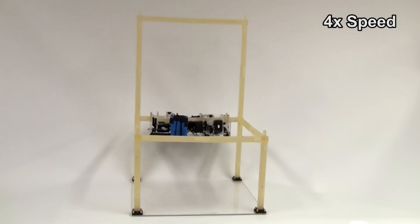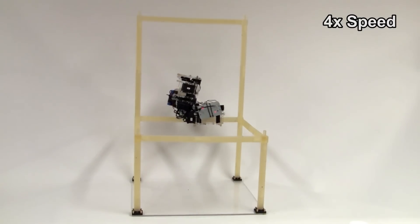The second motion primitive, shown here, allows the robot to flip 180 degrees over a beam.